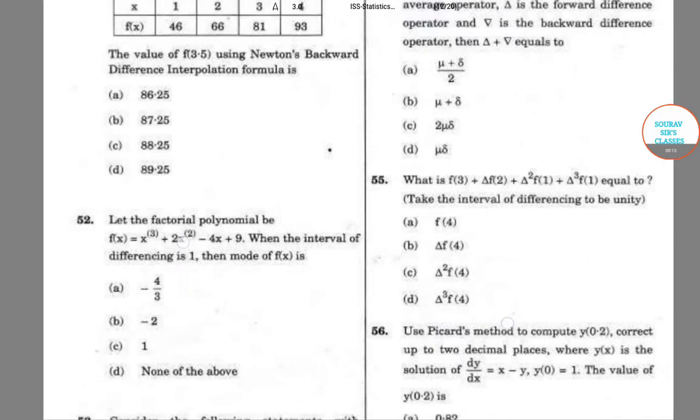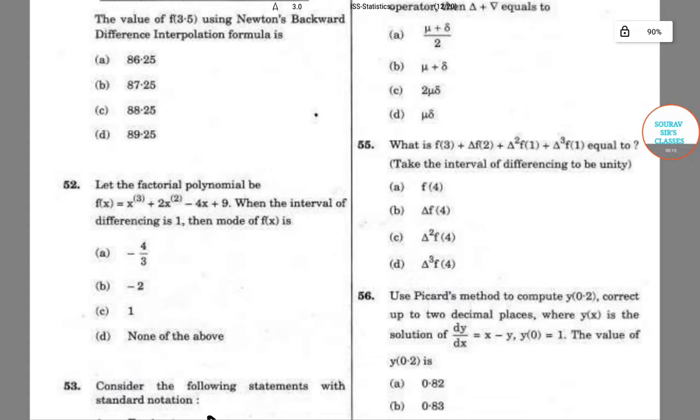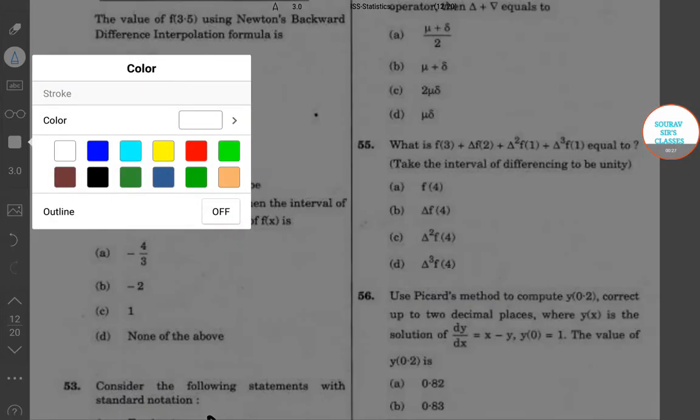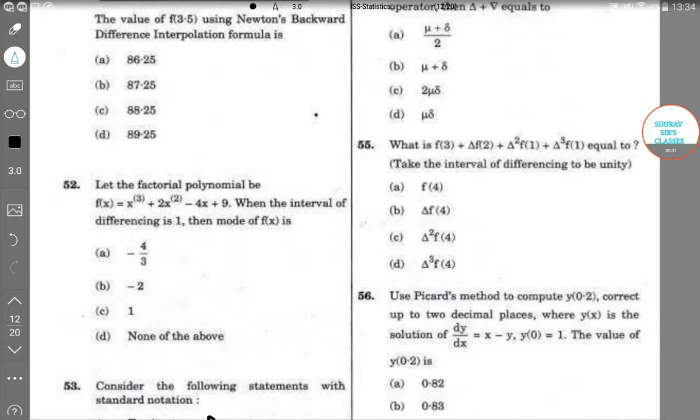In question number 56, we are given that Picard's method is to be used to compute y(0.2) correct up to two decimal places, where y(x) is the solution of dy/dx = x - y, and y(0) = 1. The value of y(0.2) is to be calculated.